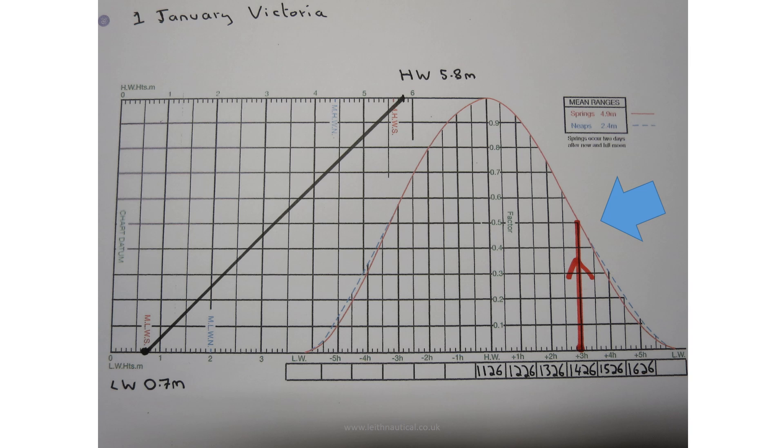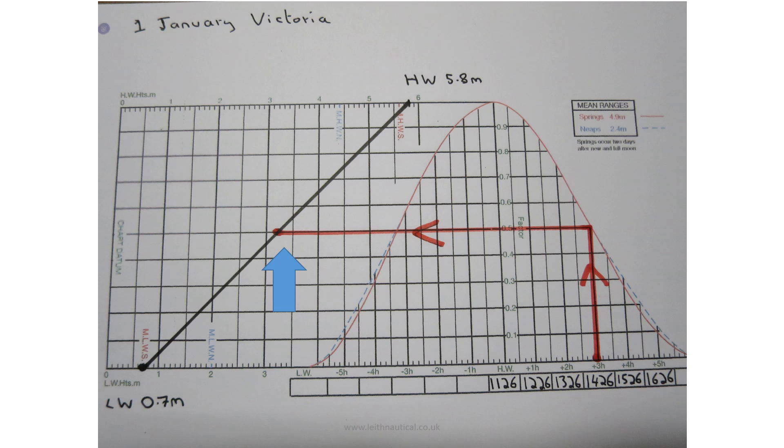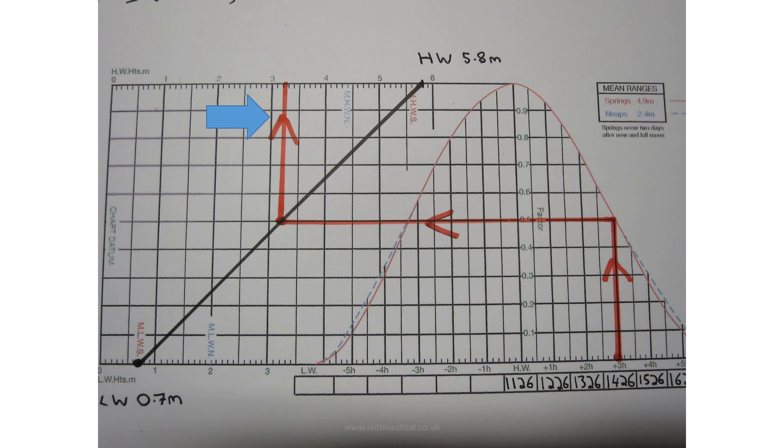So if we want to find the height of tide at high water plus three hours, that's 14:26 on the 1st of January, we mark a line from our time up until we meet the tidal curve. Then we draw a line from our tidal curve to where it intersects our high water and low water line. And finally we draw a line to the top or the bottom scale. In this case, drawing the line to the top we can see that the height of tide at 14:26 is 3.2 metres.